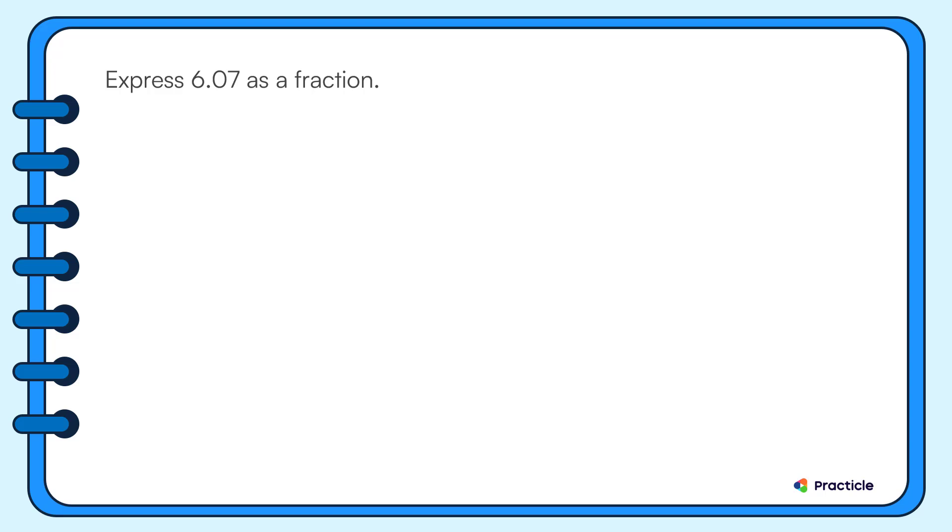Let's learn how to convert a decimal to a mixed number. For example, let's look at this math question where we need to express 6.07 as a fraction. How can we do that?